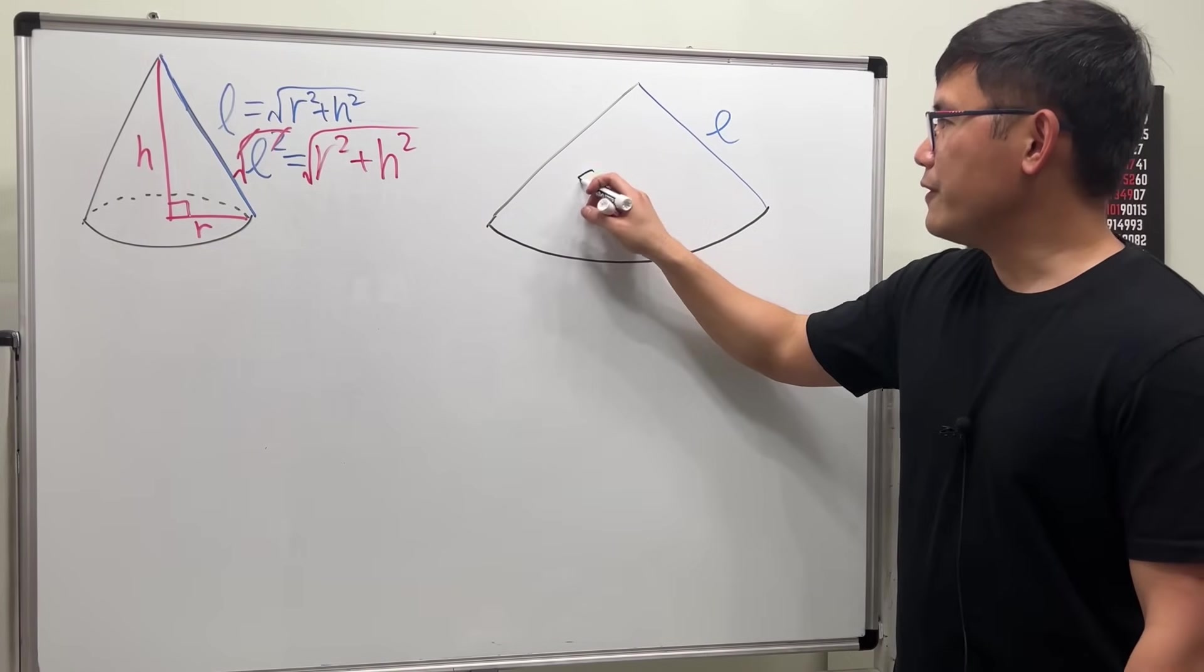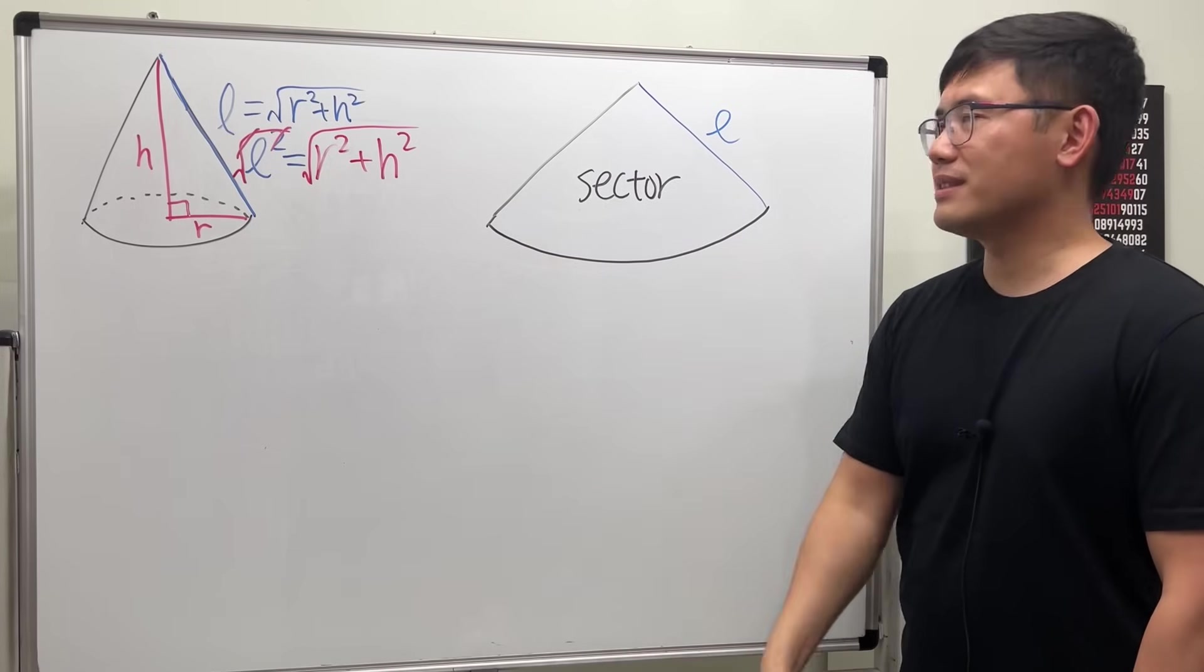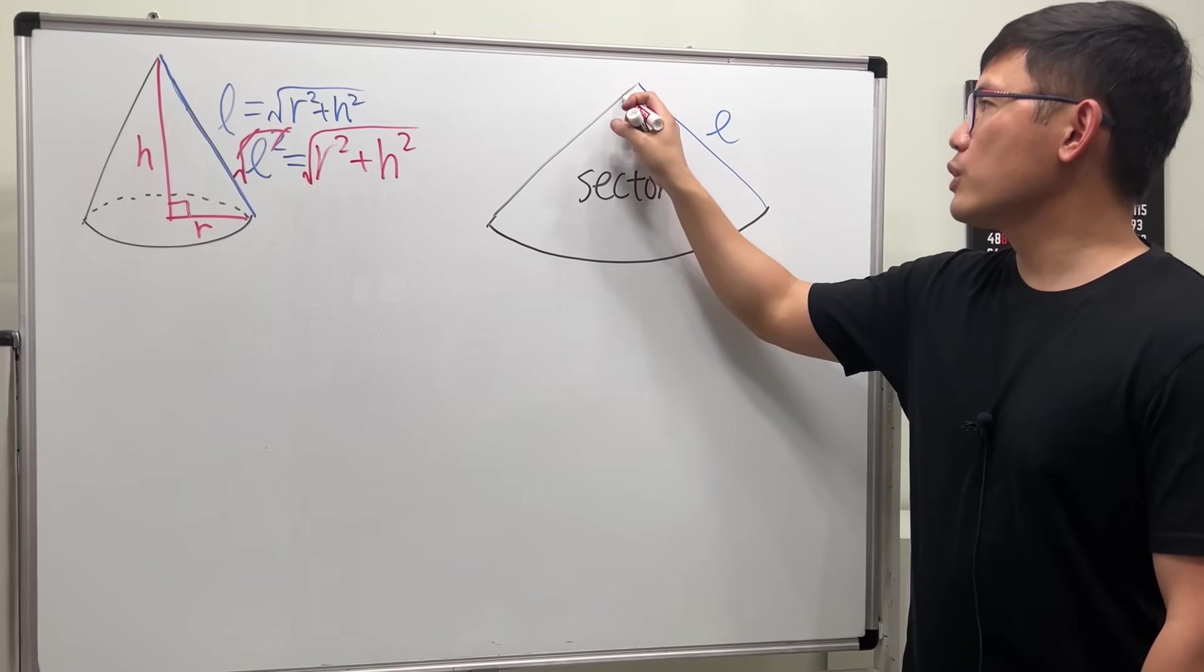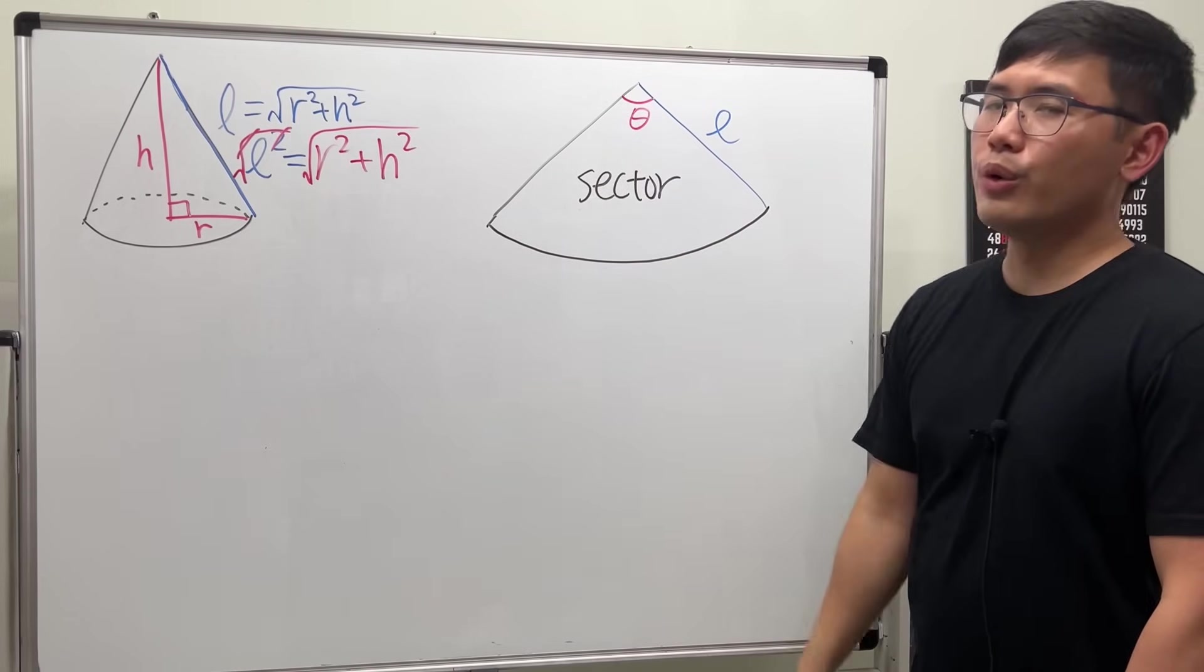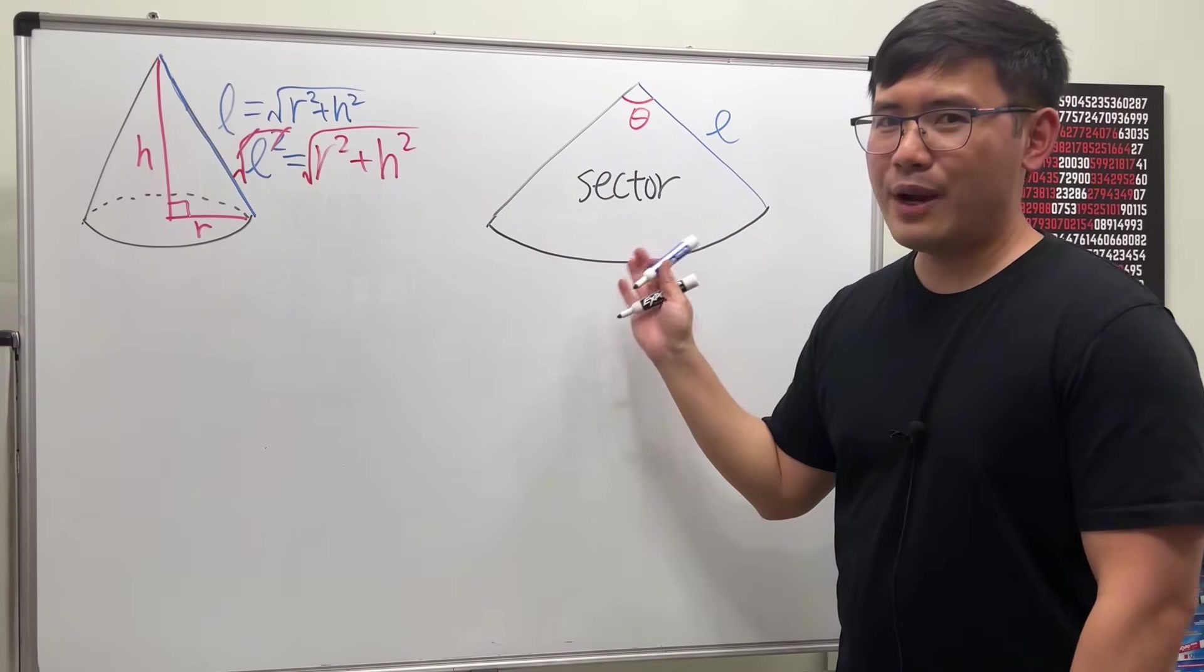Now, how do we find the area of a sector? Well, we need two things. We need to know this, which is L already, and we also need to know the angle theta. Let me give you guys a quick review on finding the area of a sector.